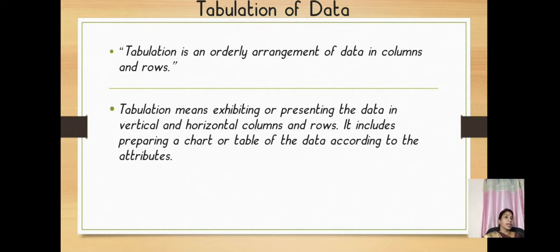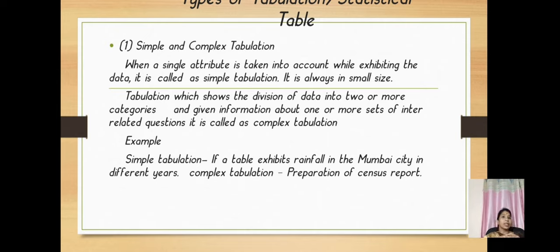Tabulation of data. Tabulation is presenting all the data in a tabulated manner. Tabulation is an orderly arrangement of data in columns and rows. It means you are going to exhibit the data in vertical and horizontal columns and rows. It includes preparing a chart or a table of data according to the attributes. Simple tabulation: single attribute is taken into account while exhibiting the data. That means it will be smaller in size.